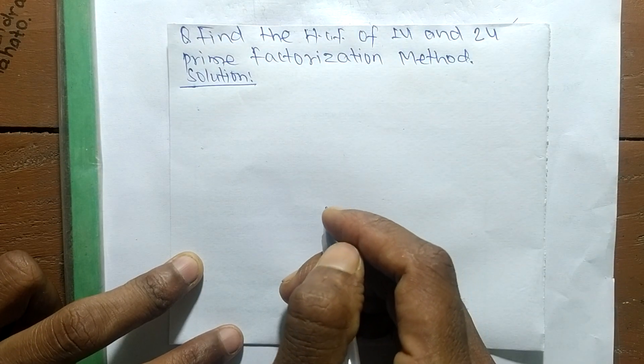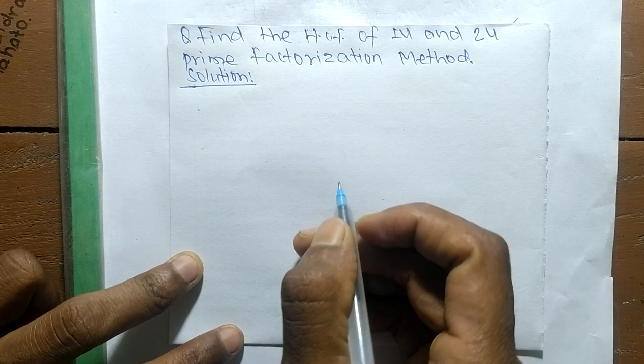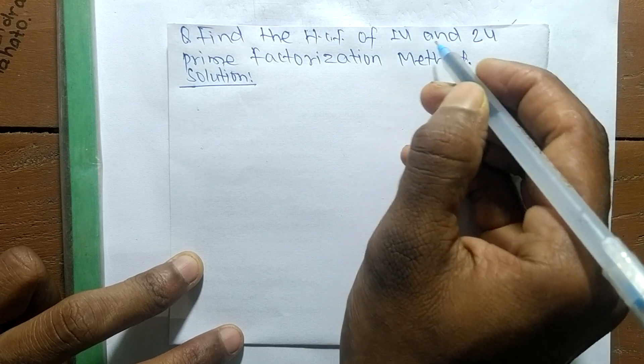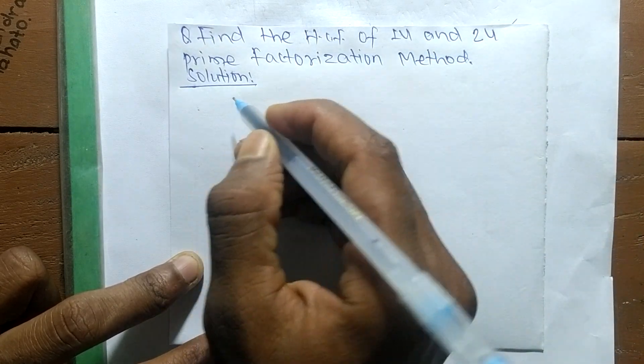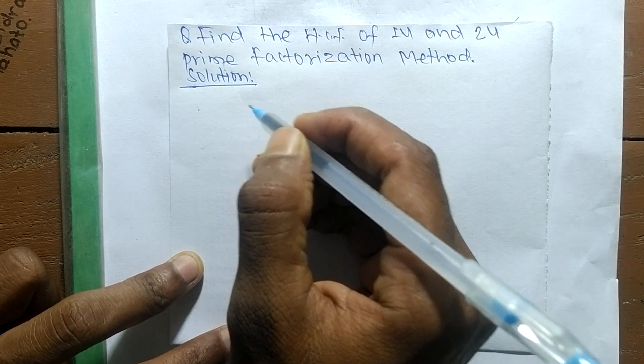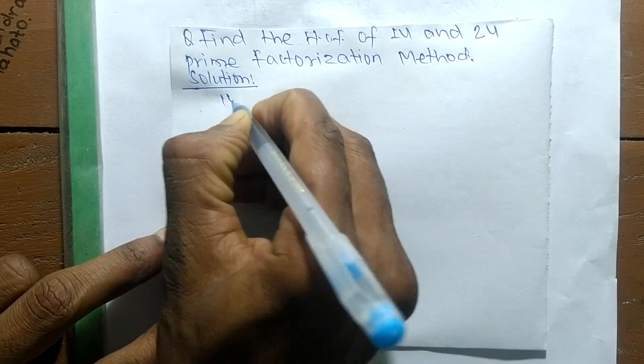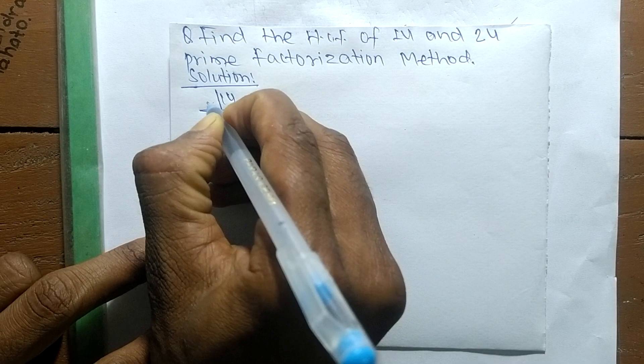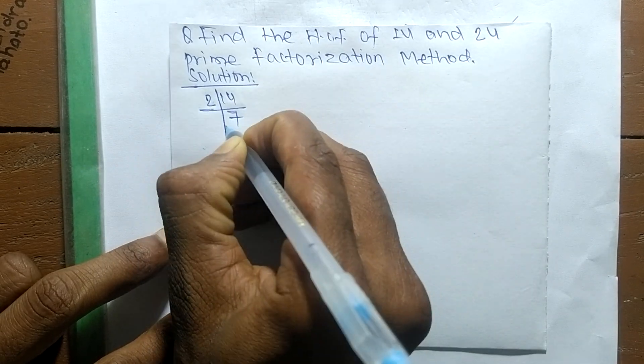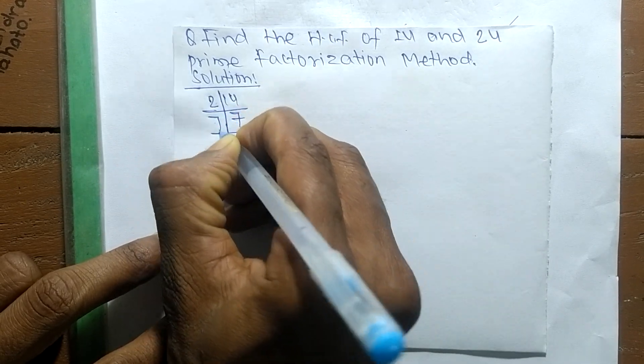So today in this video we shall learn to find the HCF of 14 and 24 by prime factorization method. First we find out the prime factors of 14, so it is 2 times 7 equals 14, and 7 times 1 equals 7.